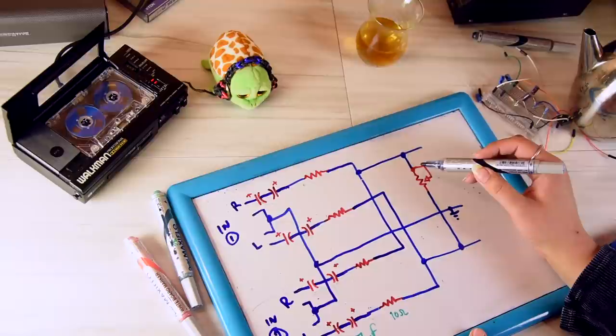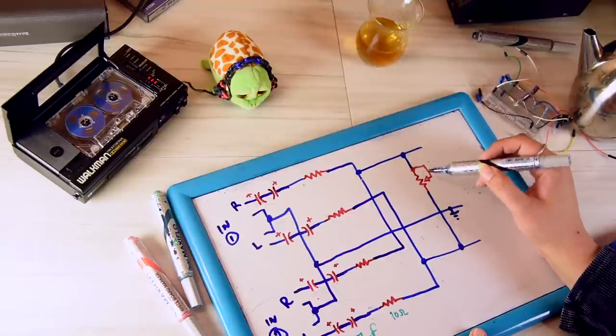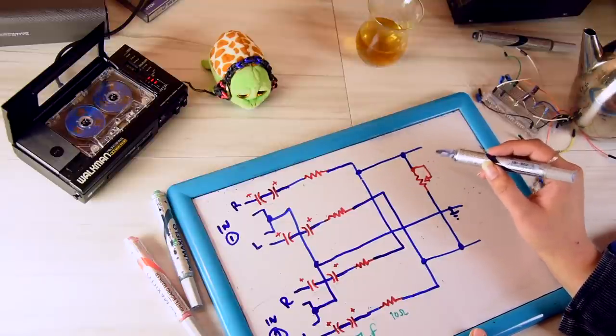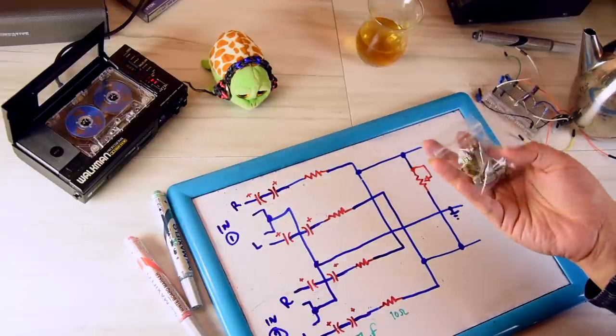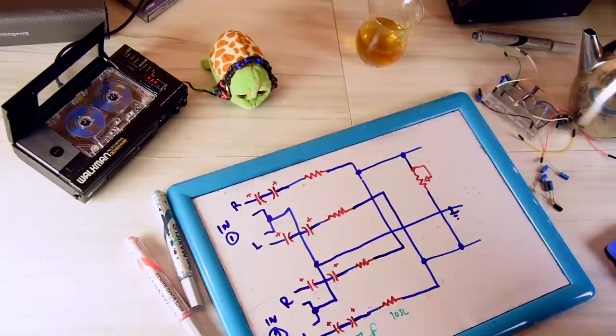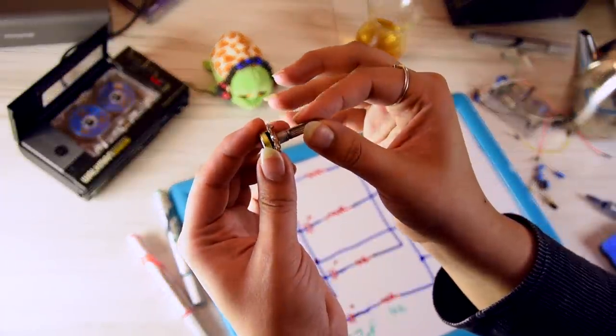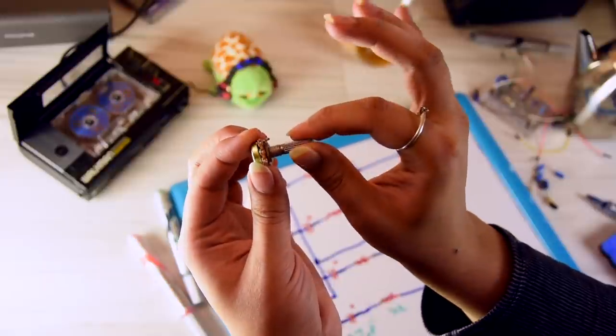So last week I determined which value variable resistor I needed. I did some tests. And I managed to get some 1K variable resistors here. So all I will need for this is a linear 1K variable resistor.